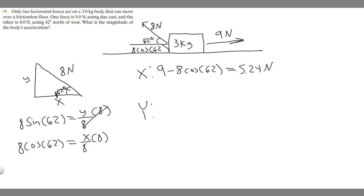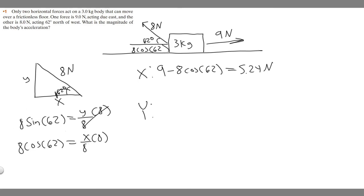Now we want the y direction. Keep in mind there's only one force acting in y, which is the y component of our eight newton force. So all we do is take eight times the sine of 62 degrees. Go ahead and do that — you'll get 7.06 newtons in the y direction.